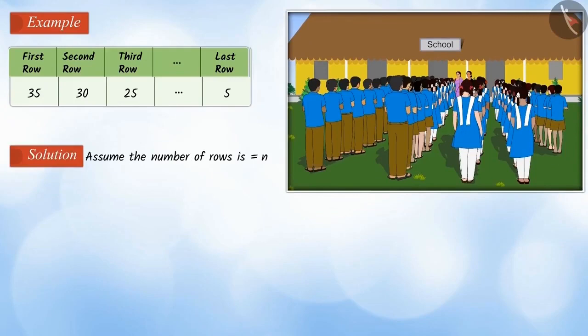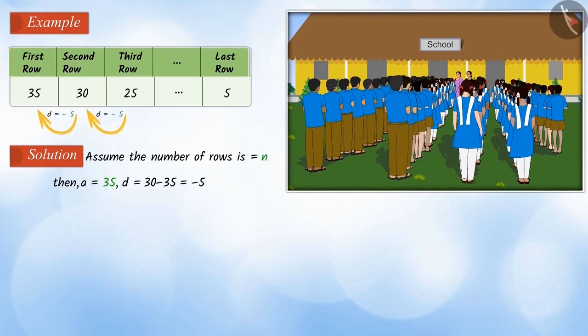Let the number of rows be n. Then the first term a equals 35, the common difference d equals minus 5, and the last term a_n equals 5. We have to find the number of rows, so we need to find the value of n.